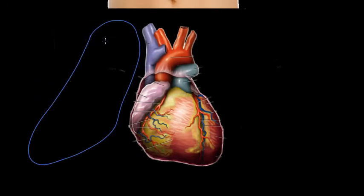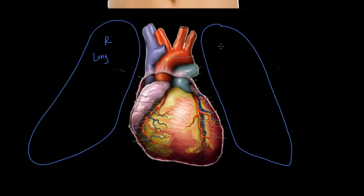This is our right lung. And on the other side, we have our left lung. And all this would be inside of the ribcage, but I'm not going to draw that now because that would make it harder to see the heart itself.